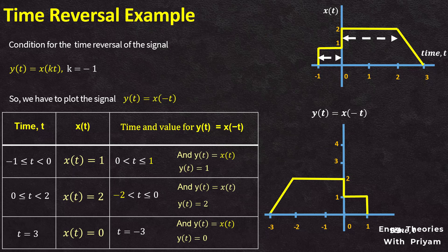This is the time-reversed version of the signal x(t), simply achieved by replacing t in x(t) with -t to get y(t). Looking at this time-reversed signal y(t), we can see that the amplitude and duration of the signal do not change — the only change is that the signal x(t) is flipped about the y-axis, hence the time reversal operation takes place.